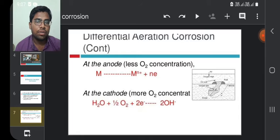At the anode, less O2 concentration results in metal forming metal ions, releasing electrons. At the cathode, more O2 concentration reacts with water and absorbs those electrons and forms 2 moles of hydroxide ions.